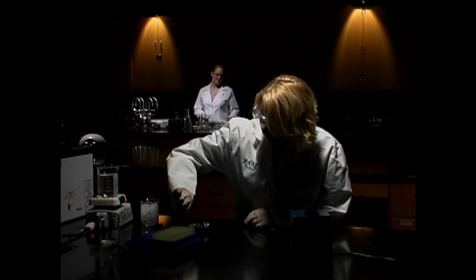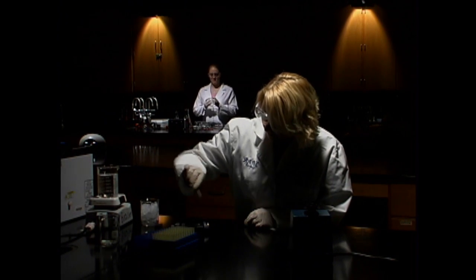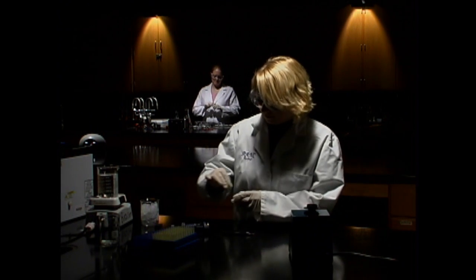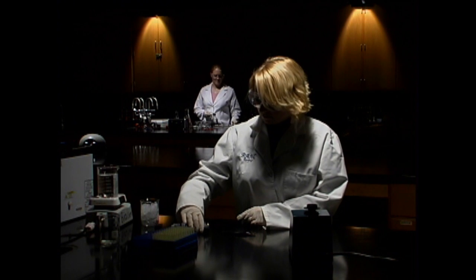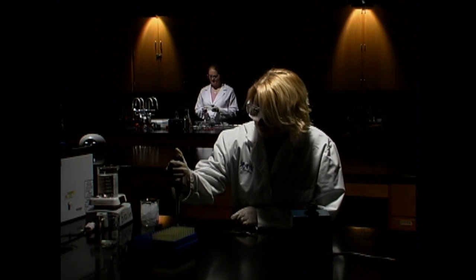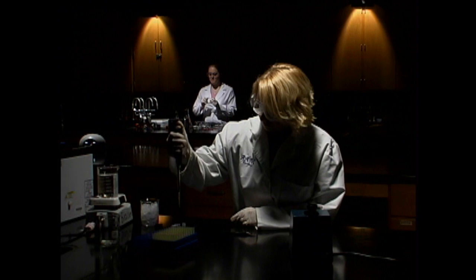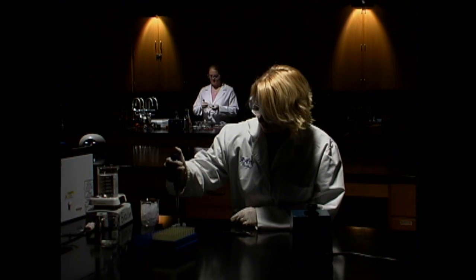Place the hairs in the bottom of a 1.5-milliliter screw-top tube. Obtain a lysis solution and mix it by pipetting it up and down. This solution contains hydrochloric acid to adjust pH, proteinase K to digest proteins, and a chelating agent to remove magnesium.